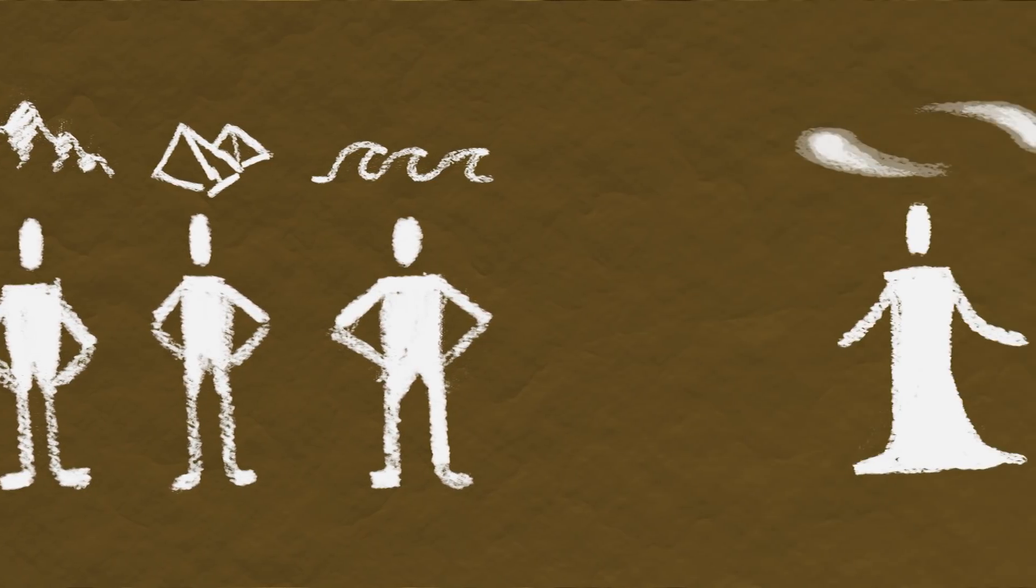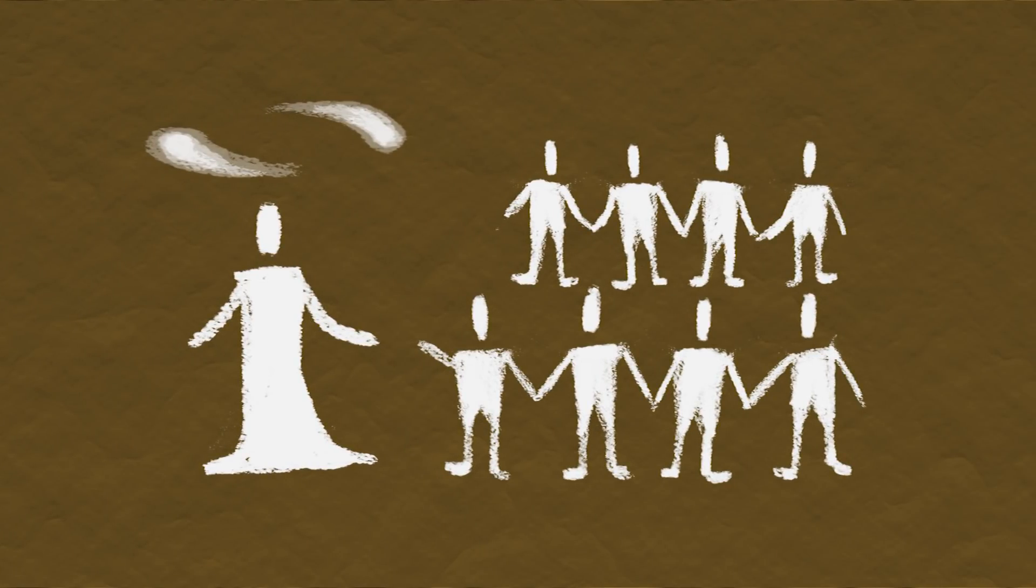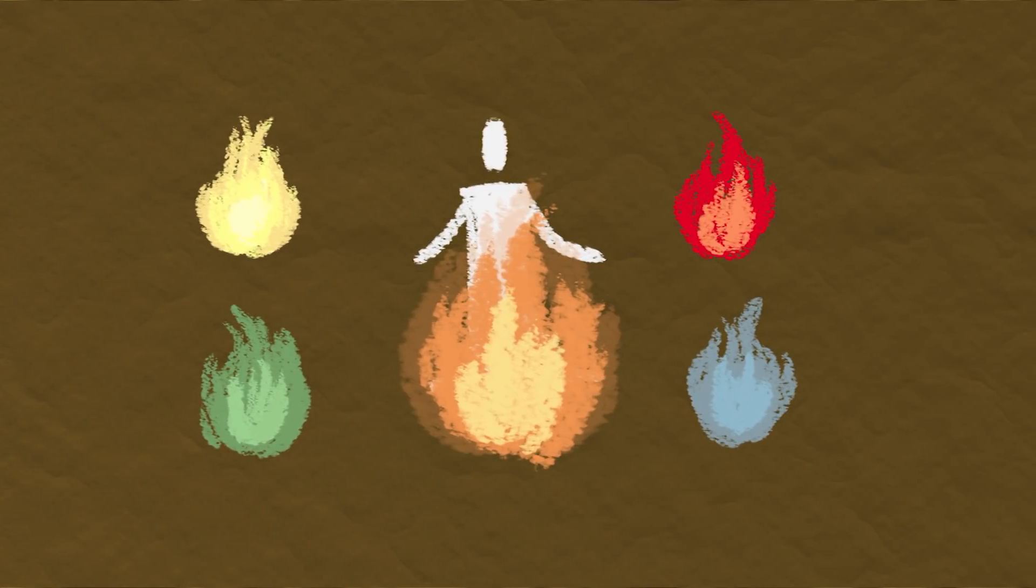As such, they chose an elder to act as a medium between the spirits and the people, to unite them once and for all. Hence, with her power, the first elder split the eternal flame into five parts.